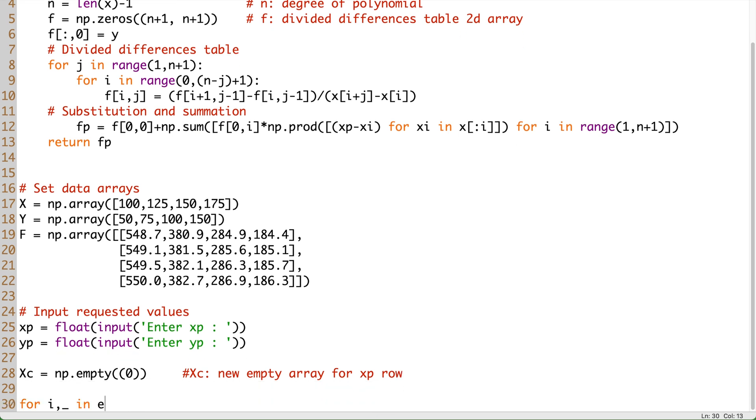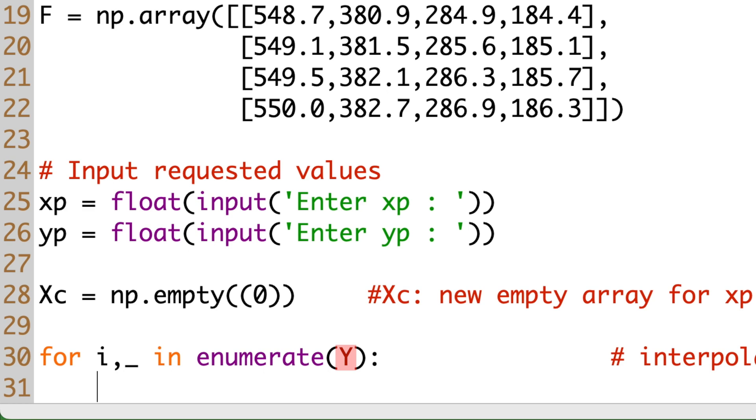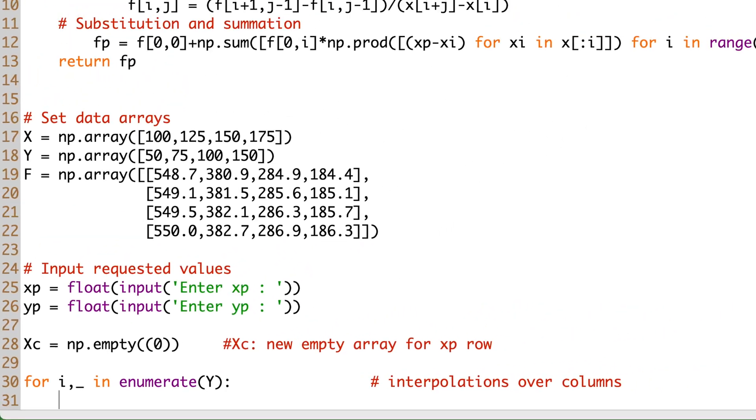Next, we start a for loop that goes through the columns one by one. Since we only need the number of elements in the y array, we make the loop over y that counts the columns by using the enumerate function and the counter i. And because we don't need the values from inside y here, we put an underscore as a simple placeholder. Using the underscore in this way is a common practice in Python programming.